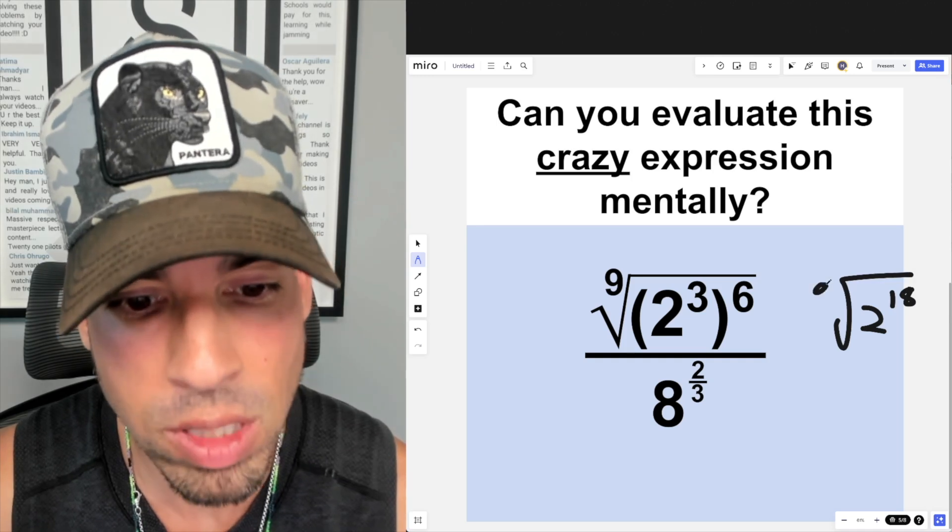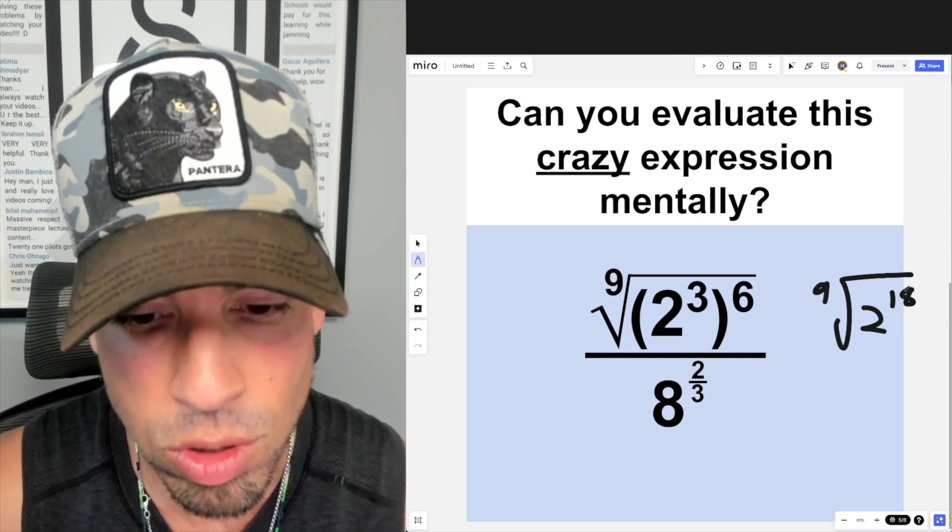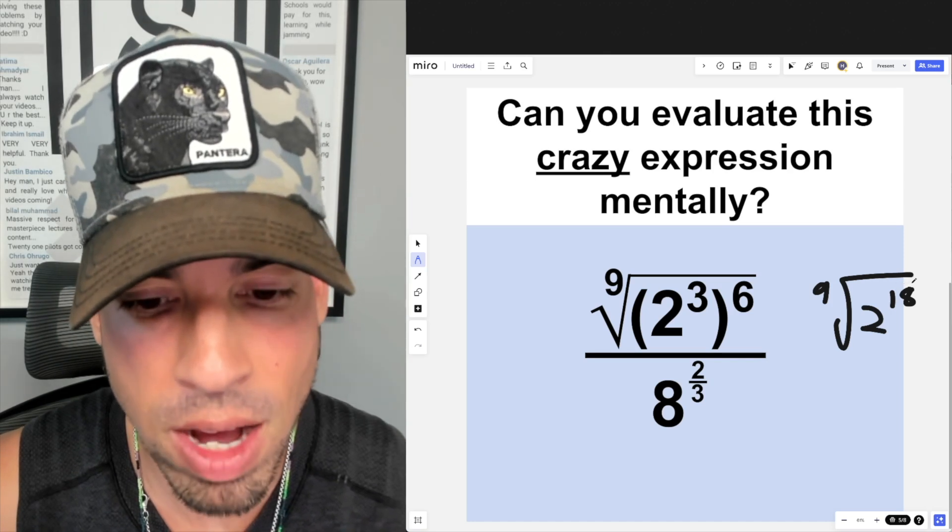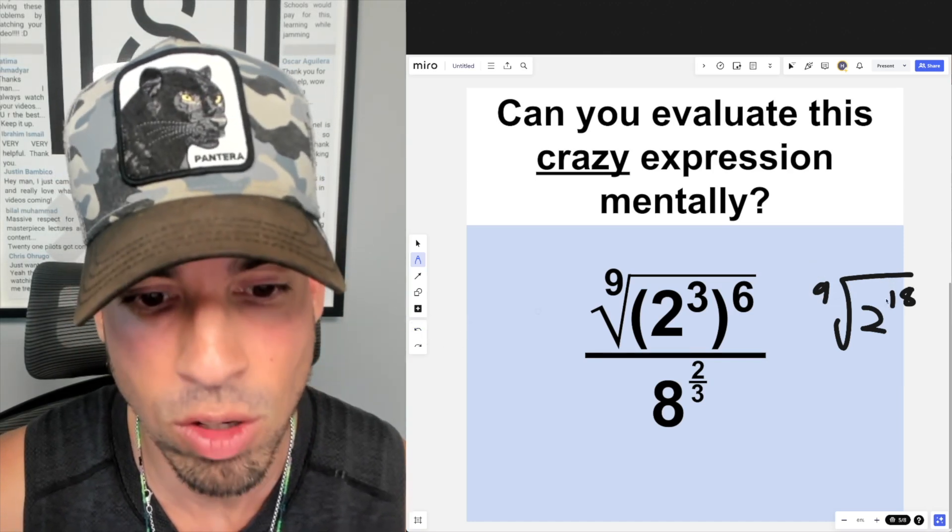Then we're taking the ninth root of 2 to the 18th power. Now the trick when you're evaluating these radicals is to simplify. You take this and divide it by the index of that radical.